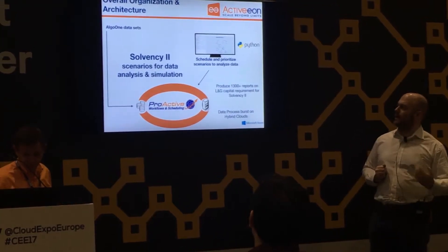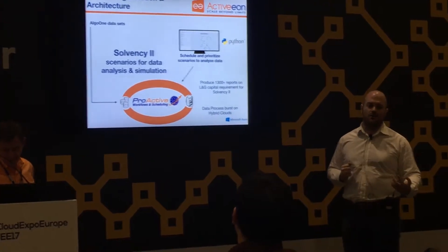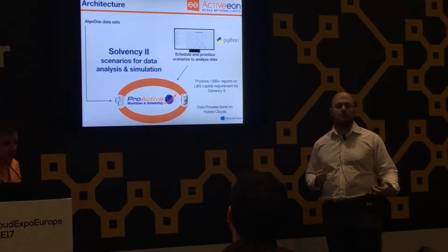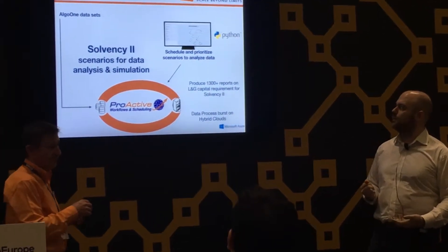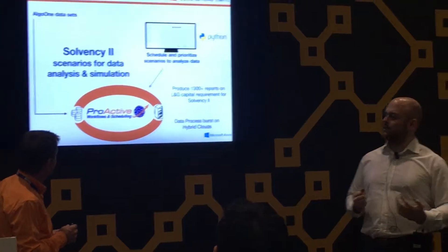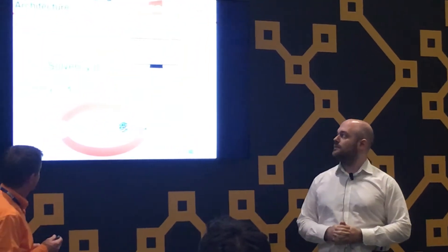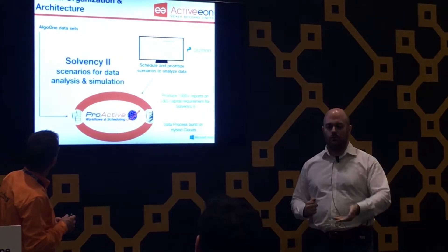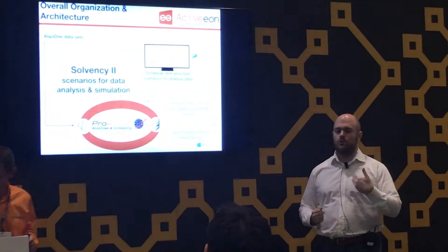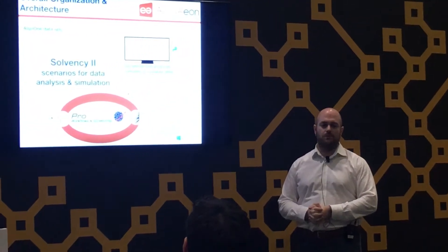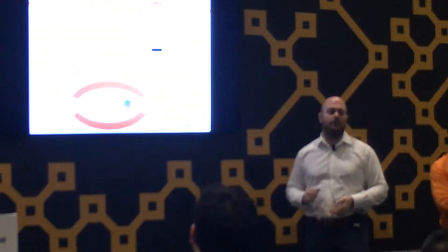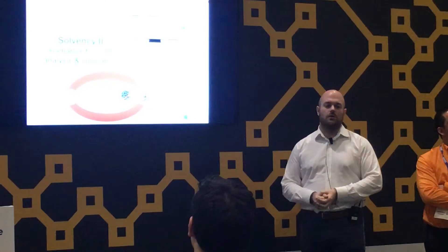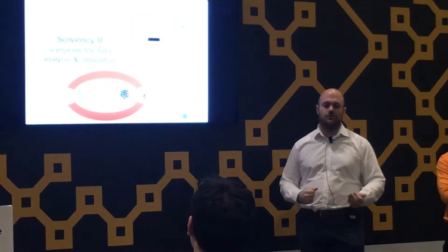On one side we have the ALGO-1 dataset, which is our balance sheet — all the terms and conditions of every instrument we own and how many are in our portfolios. That balance sheet is pushed into Proactive and simulated 2.5 million times to produce around 1,300 different reports. Every batch produces about half a terabyte of data, which is published to our internal customers and eventually reaches the regulator, the Bank of England.